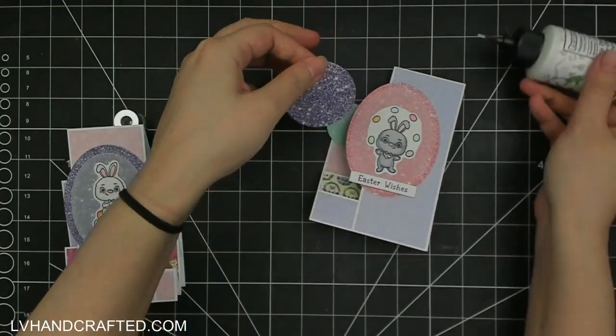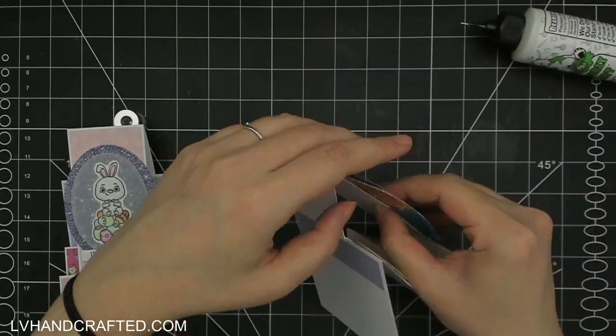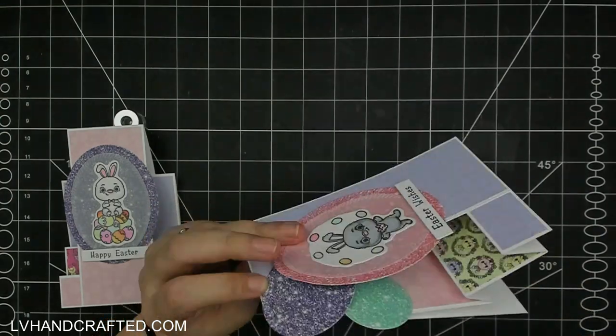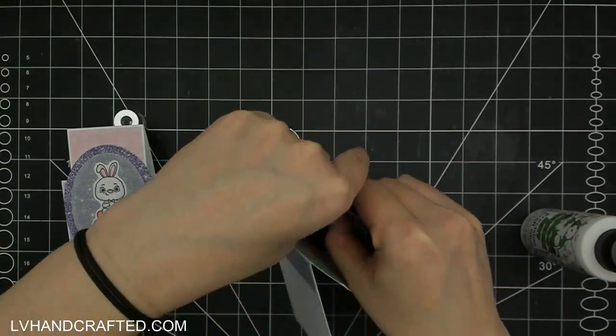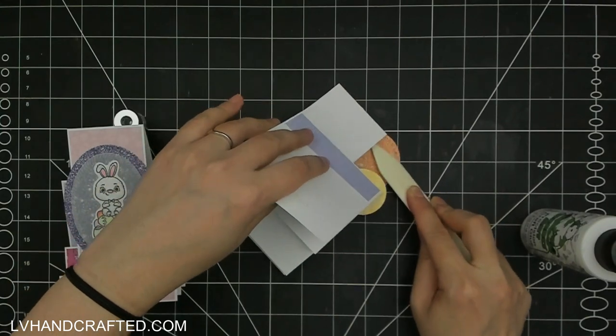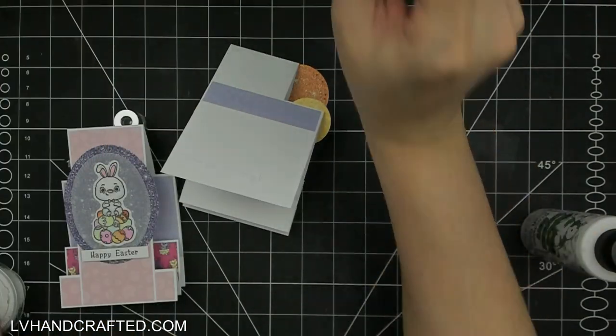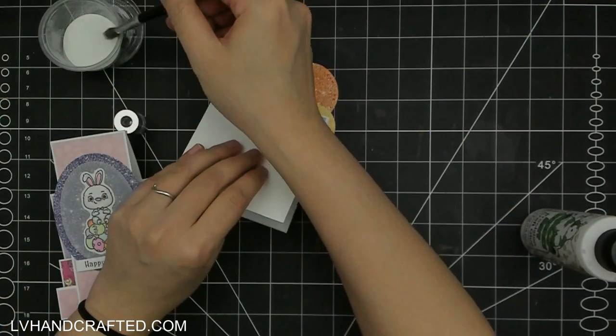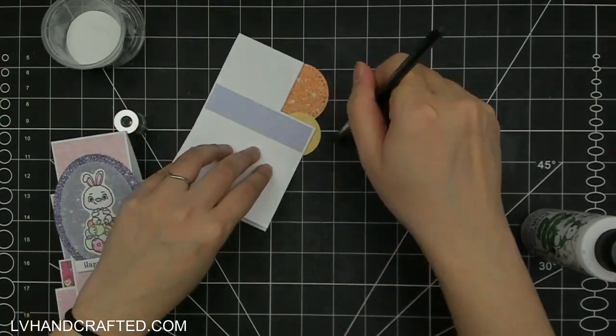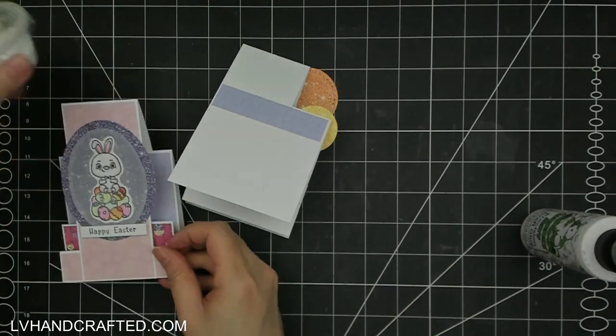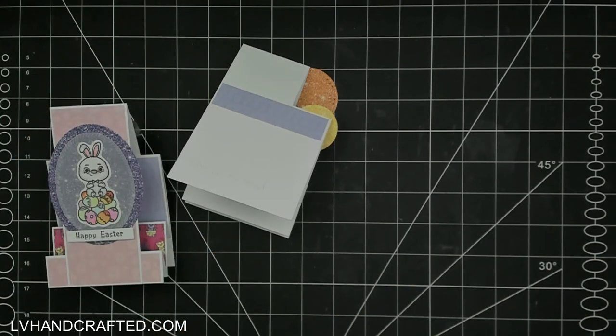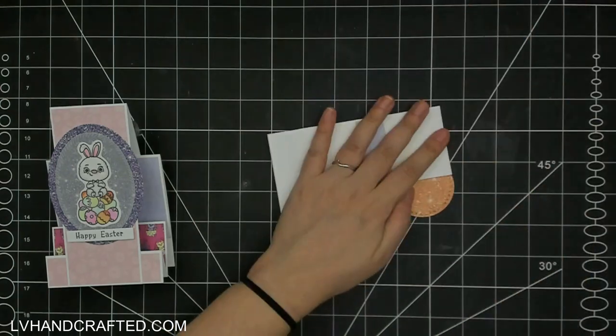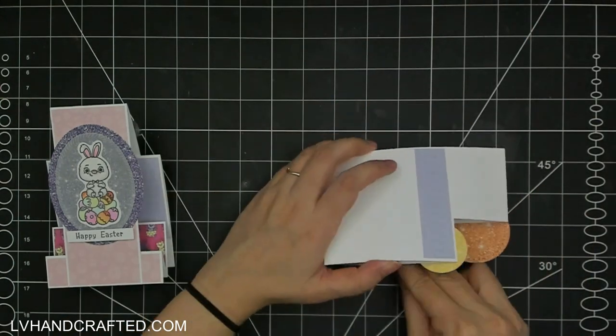And I thought it would be fun to add a couple more die cuts of this gorgeous glitter paper off to the side, just to create something a little bit abstract, a little bit fun, especially since that bunny rabbit is juggling eggs. So I thought just having a lot of different round elements might be something kind of cute and fun and tie in a little bit with the focal image.